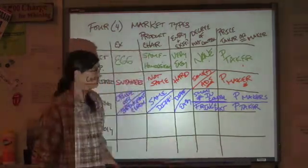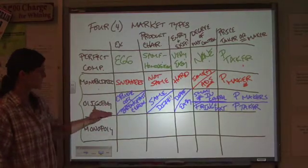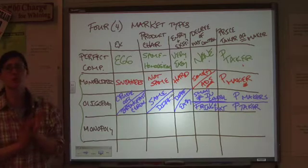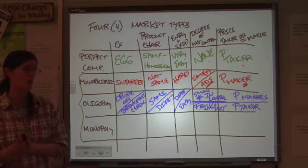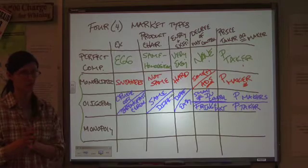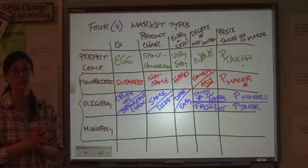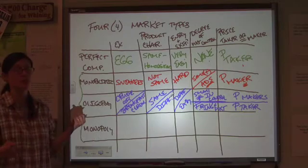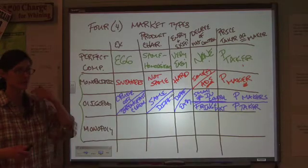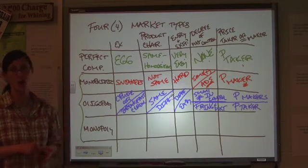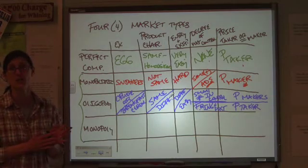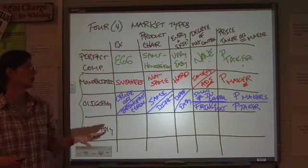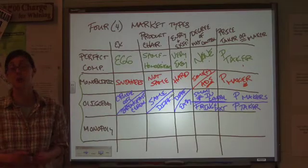But we can't put it up here because of this. Because you have a small number of firms that are pretty much calling all the shots. Baby food, same way. Diapers. There are lots of markets that fall into that category because of this. All right. Now, our last market type. And this one, there are a lot of misconceptions about what monopolies are.